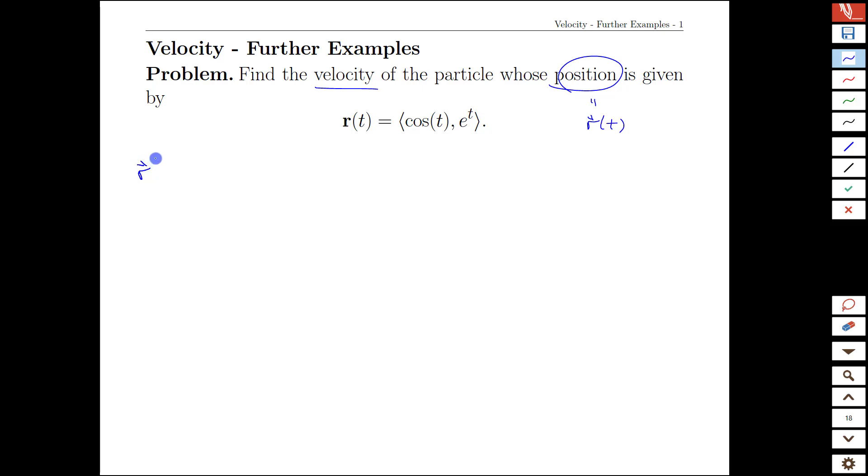We can indicate this derivative in a number of different ways. We could call it r prime of t, we could call it the time derivative of r, or we could call it velocity of t if it's understood that velocity is what we mean by v here. All of those work out the same way. We simply take the derivative of each component by itself.